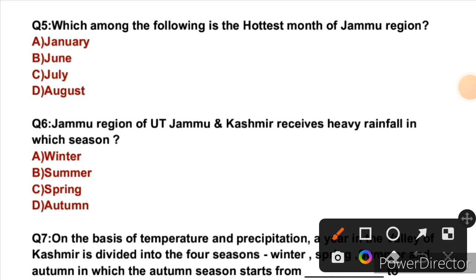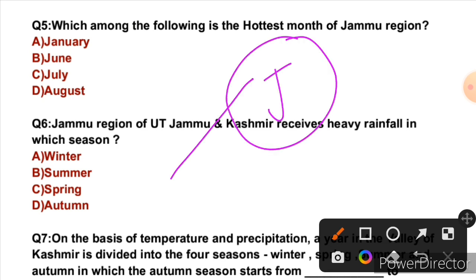Question 5: Which among the following is the hottest month of the Jammu region? When the monsoon enters the Jammu Plains, that happens in July — so the month just before, June, is the hottest month of the Jammu region. So the right answer is B — June. For comparison, July is the hottest month for Kashmir, and August for Ladakh. January is the coldest month for Jammu, Kashmir, and Ladakh.